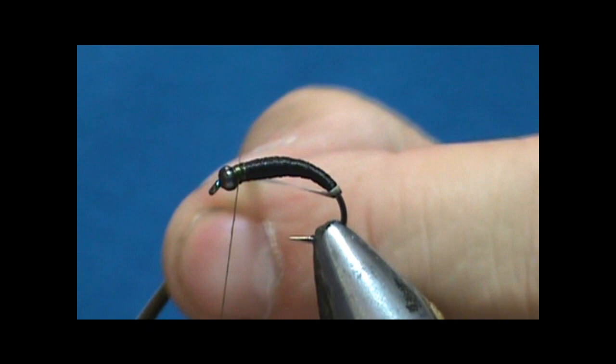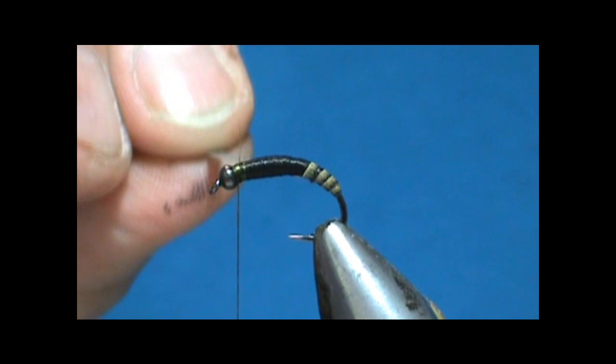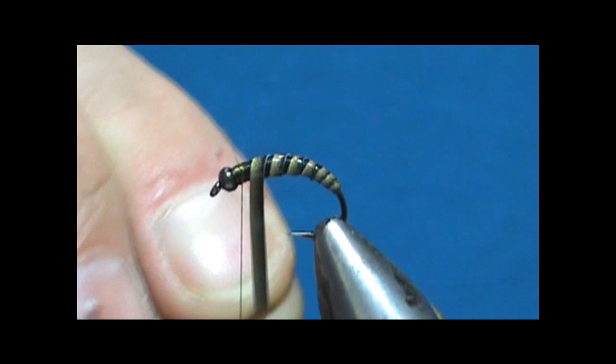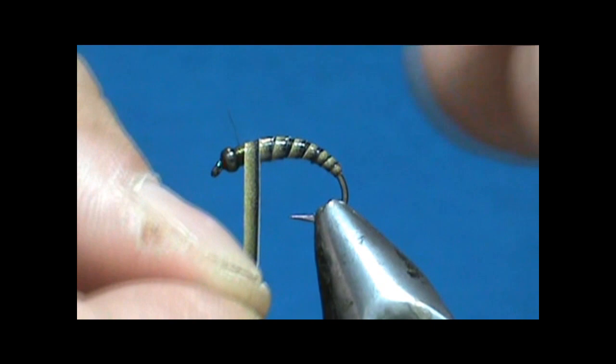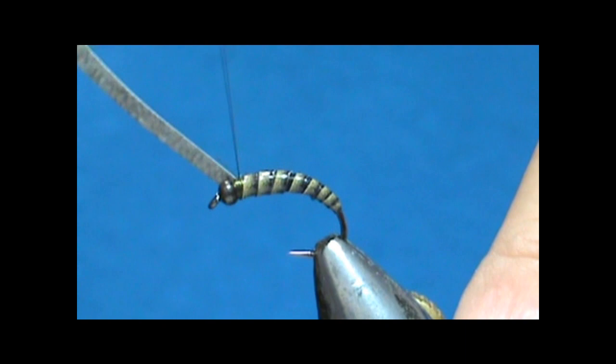Now we can take our quill and we can start wrapping that. Of course if you have a rotary vise you can use that to wrap it and make some short work out of it. I like to use my fingers to wrap them. Sometimes with the rotary vise you kind of get a little bit too quick and what happens is you leave a gap.